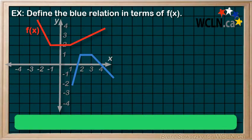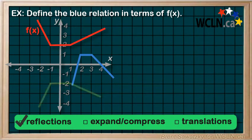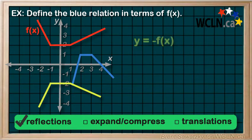Same order as before. We start with reflections, then expansions and compressions, and finally translations. Starting with our vertical reflection, we show it on our graph and document our equation as y equals negative f in terms of x.